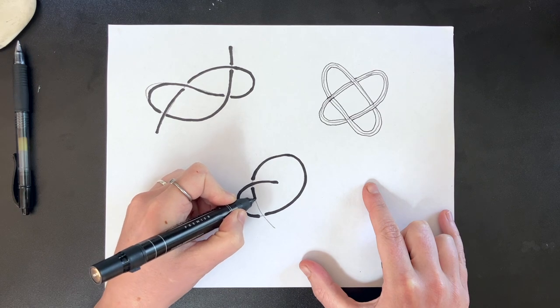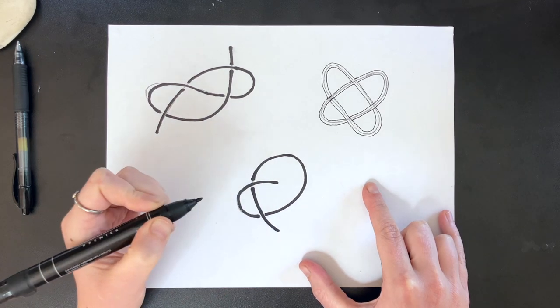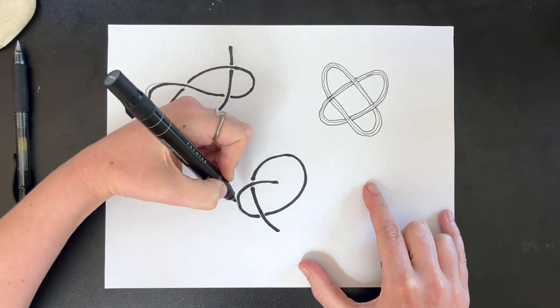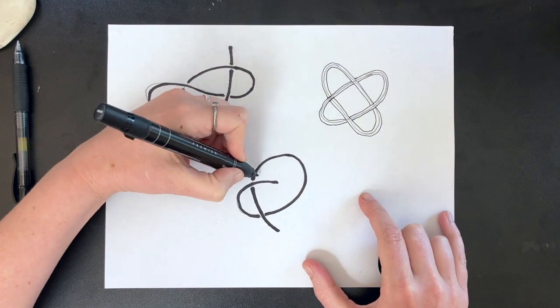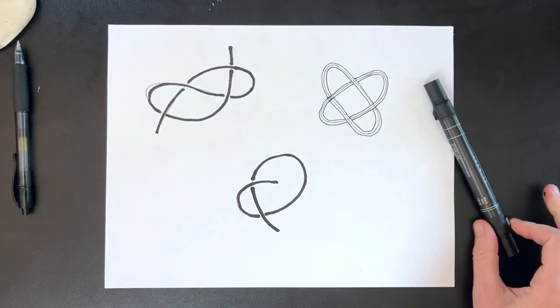And that is the only way to break one of these scribble knots, is to leave an end inside the knot. As long as you join the ends or make sure they're both outside, you should be fine.